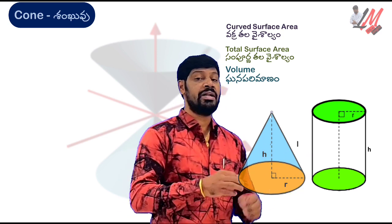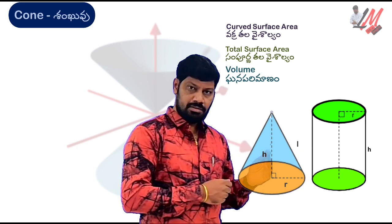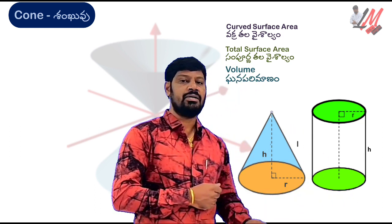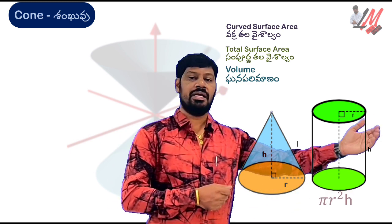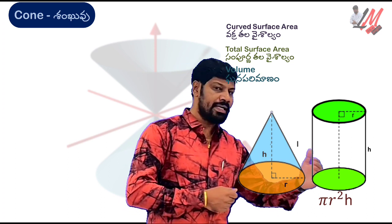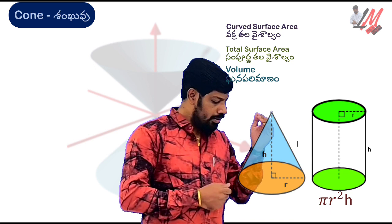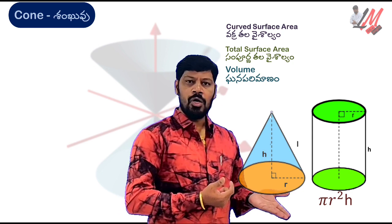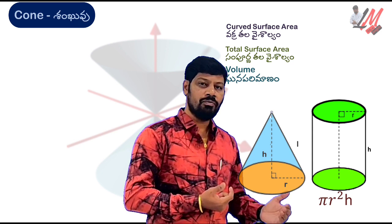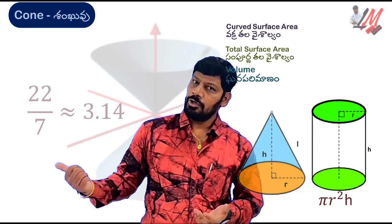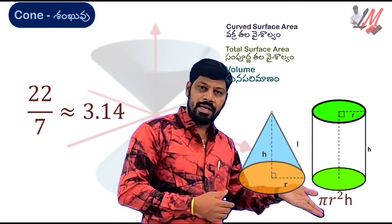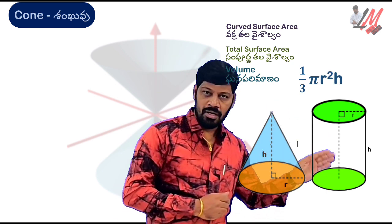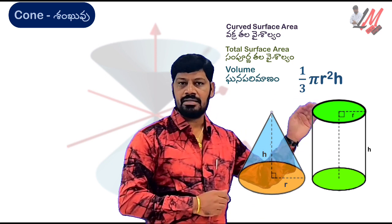So the cylinder is compared to the cone — same radius, same height. The volume of the cylinder is πr²h. The comparison between prisms and pyramids: pyramid volume is one-third of prism volume. So the cone volume is one-third of the cylinder volume, which gives us one-third of πr²h. Here π is 22/7 or 3.14, r is radius and h is height. So the volume of cone is (1/3)πr²h.